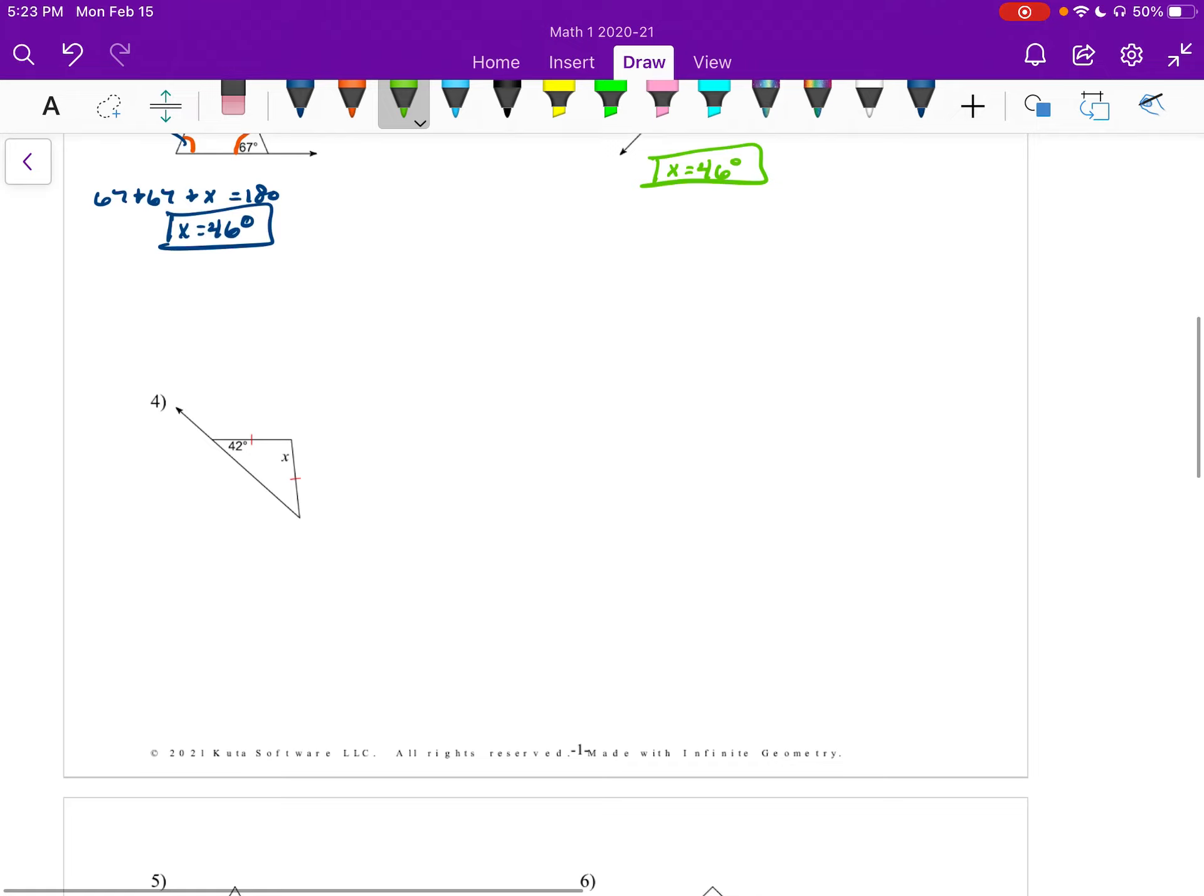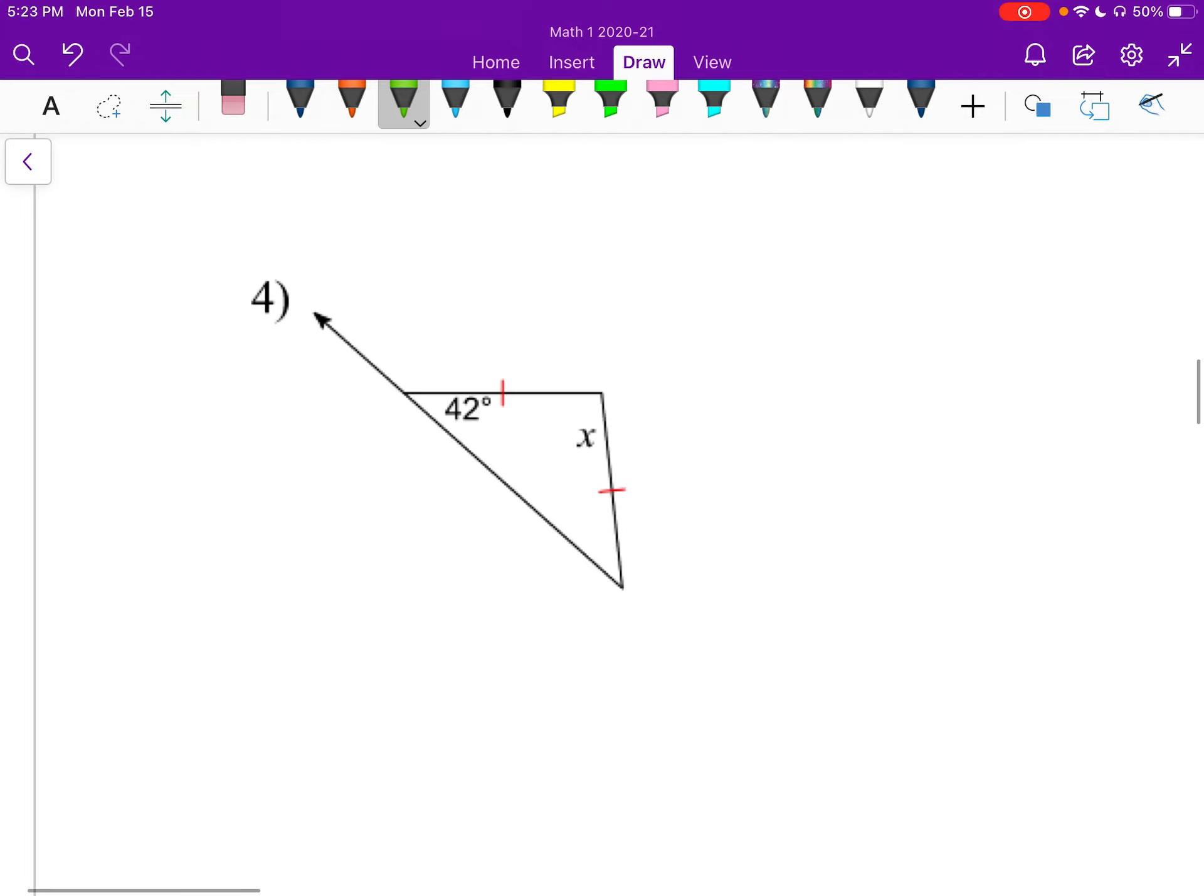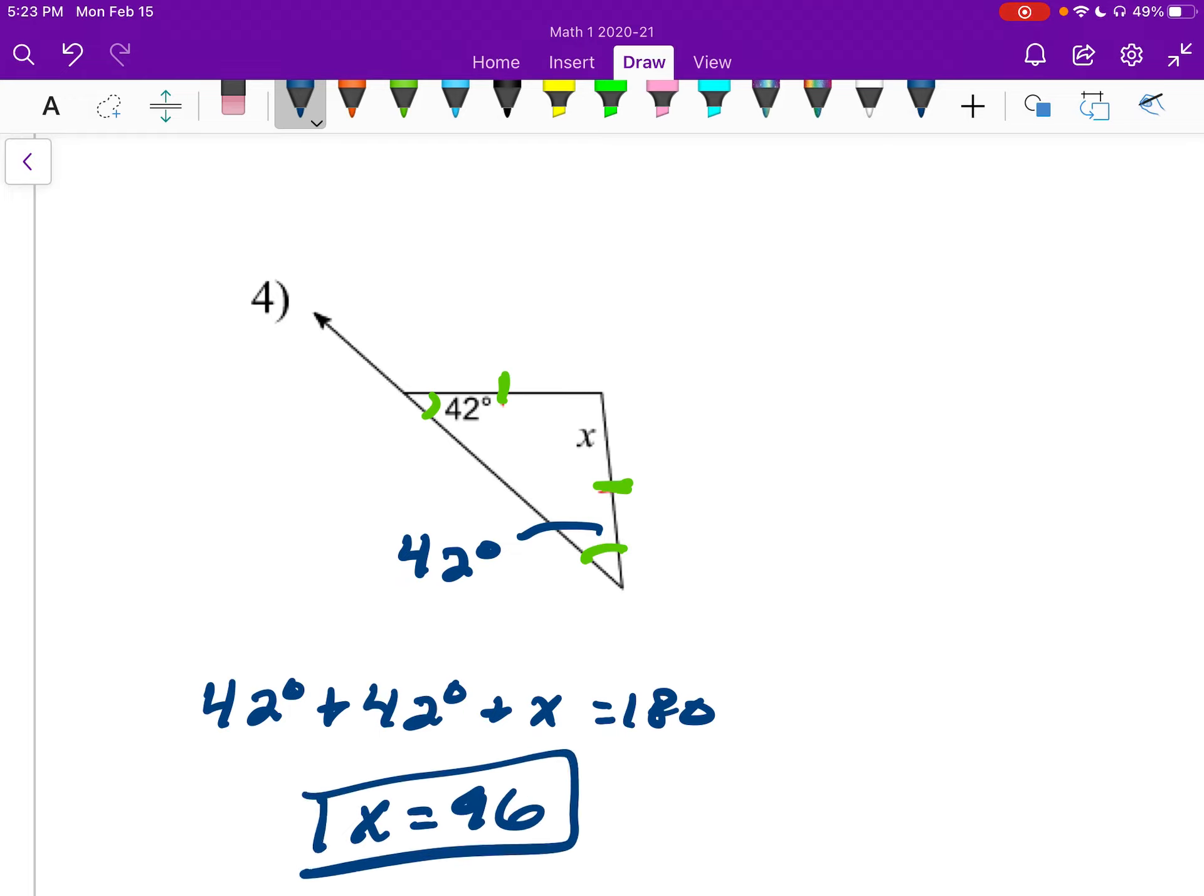Number four. This one and this one are congruent, those sides. So we know that the 42-degree angle is congruent to this angle down here. So this will be 42 degrees. So from here, I can say, well, 42 degrees plus 42 degrees plus x is 180. So if I take 180 minus 42 minus 42, I get 96. So x equals 96. And there we are.